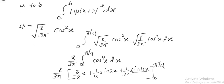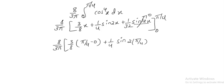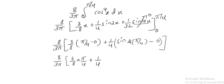Applying the limits: (8 by 3 pi) into [(3 by 8) times (pi by 4 minus 0) plus (1 by 4) times (sin(2 times pi by 4) minus sin 0)]. Sin(pi by 2) equals 1, so this becomes (8 by 3 pi) into [(3 by 8) times (pi by 4) plus (1 by 4) times 1]. This gives a probability approximately equal to 0.46.